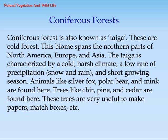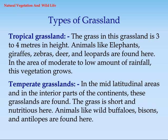Coniferous trees are very useful for making papers, matchboxes, etc. Tropical Grassland grass can be 3 to 4 meters in height. Animals like elephants, giraffes, zebras, deer, and leopards are found here.